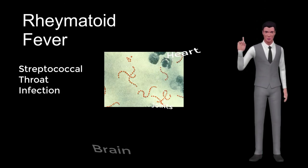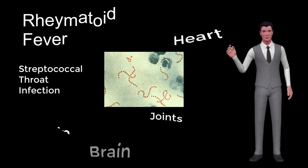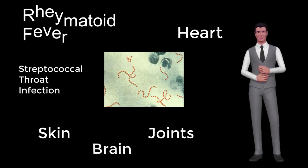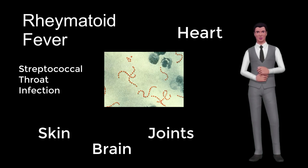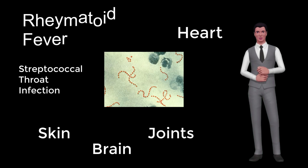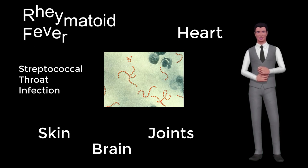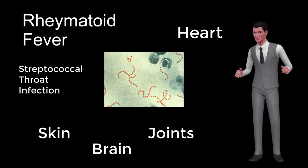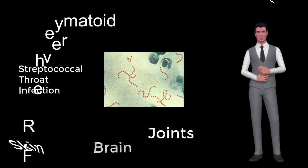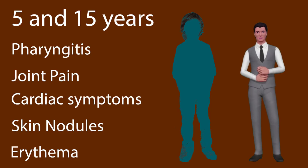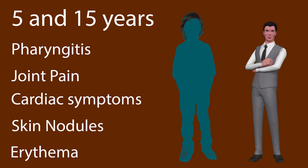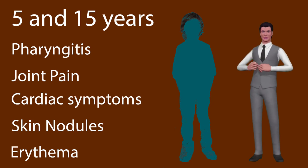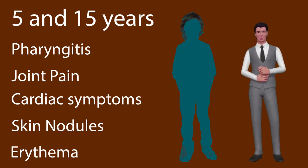Rheumatic fever is an inflammatory disease that can affect the heart, joints, skin, and brain. The disease typically follows streptococcal throat infection. Rheumatic fever is an acute non-infectious inflammatory sequela to a group A beta-hemolytic streptococcal (Streptococcus pyogenes) pharyngitis, with joint, skin, subcutaneous, neurologic, and cardiac symptoms appearing shortly after the infection.